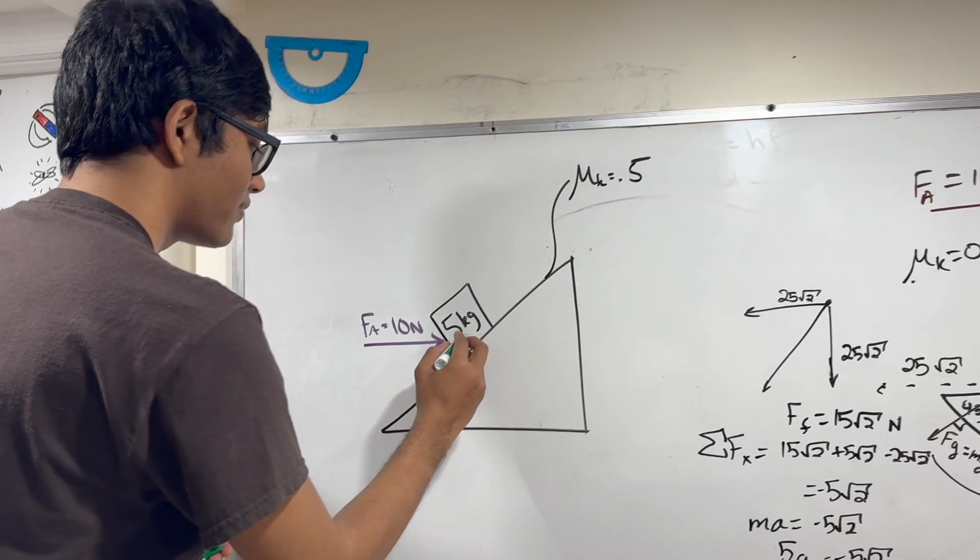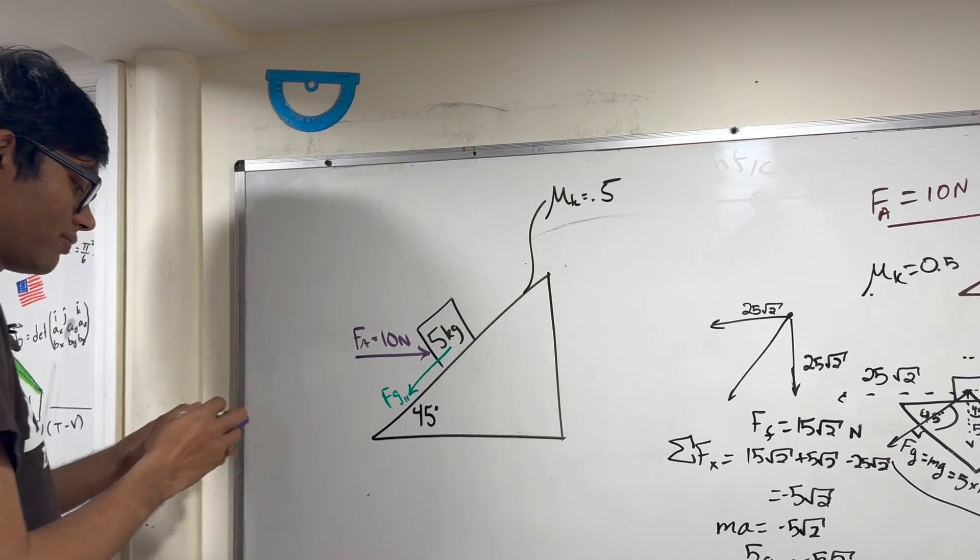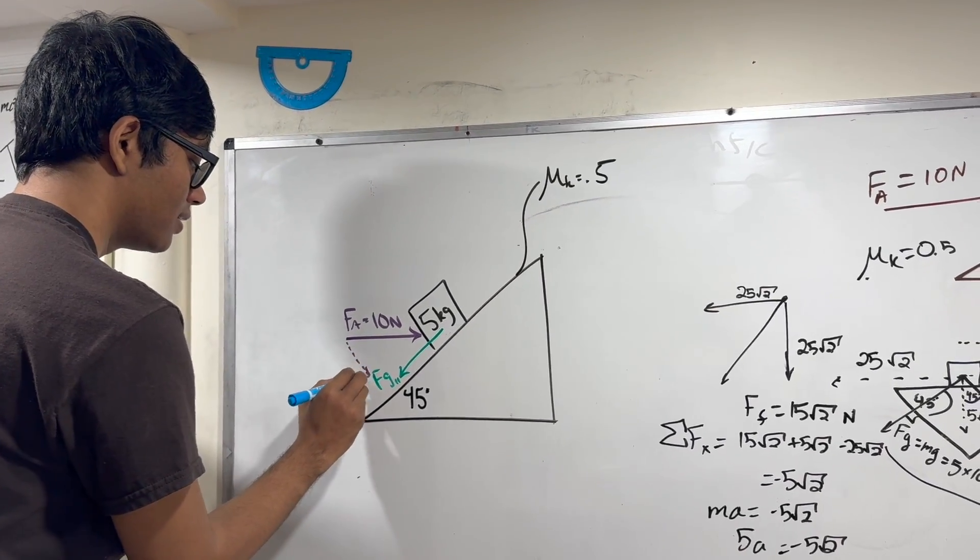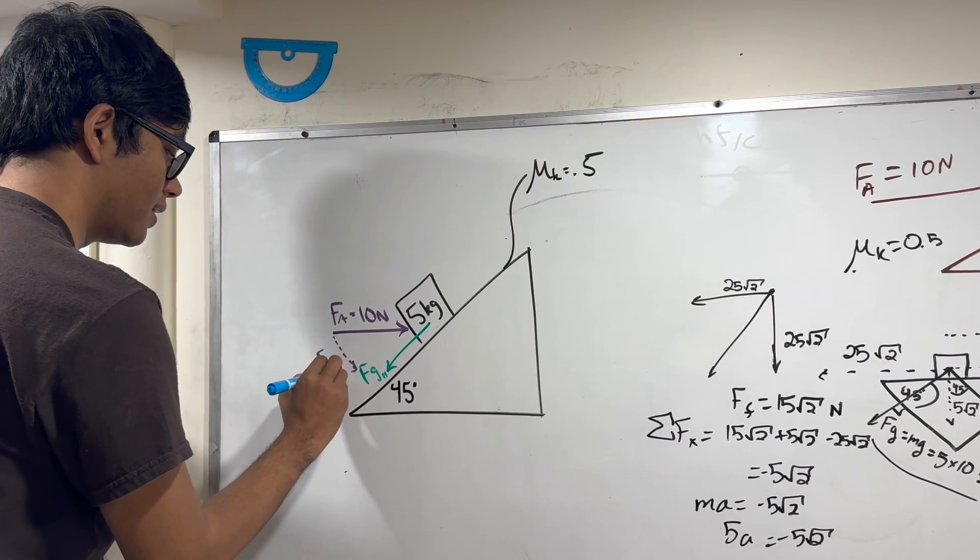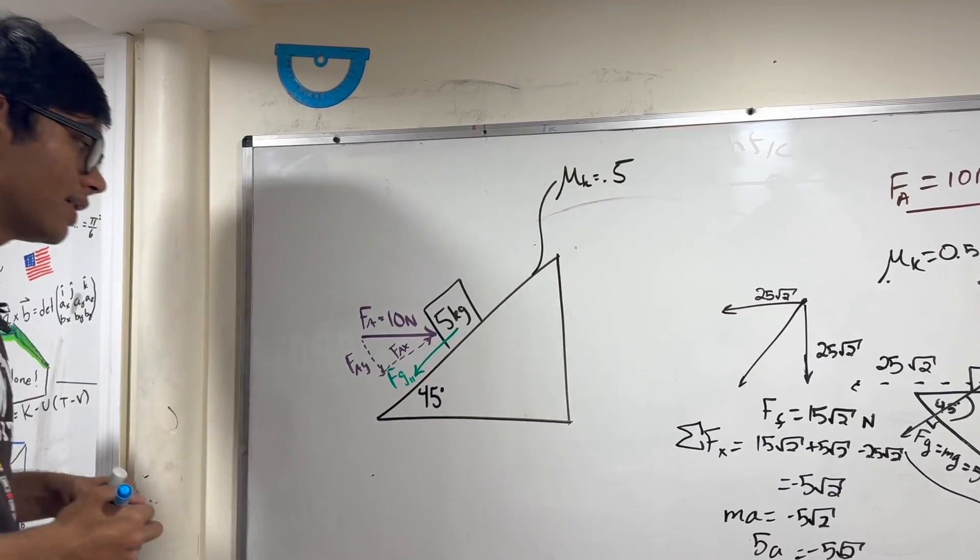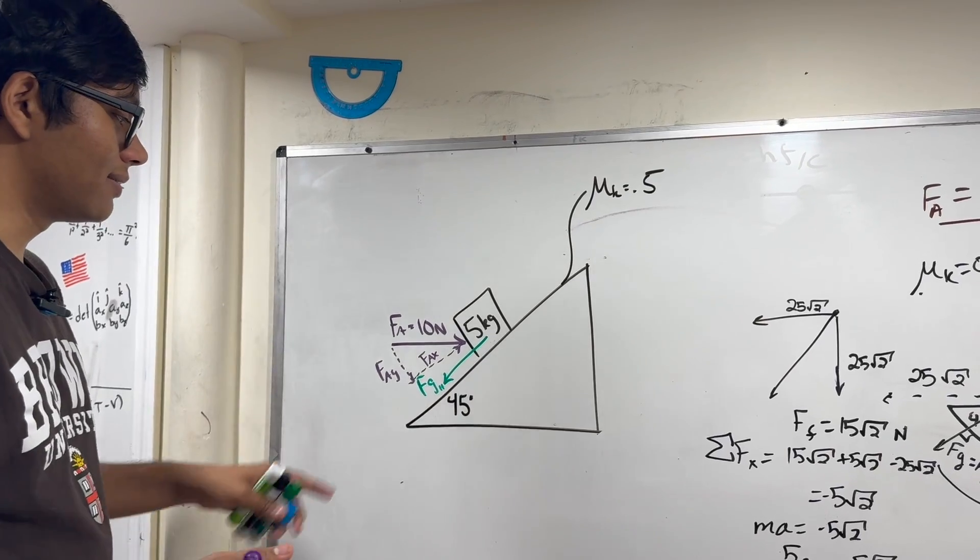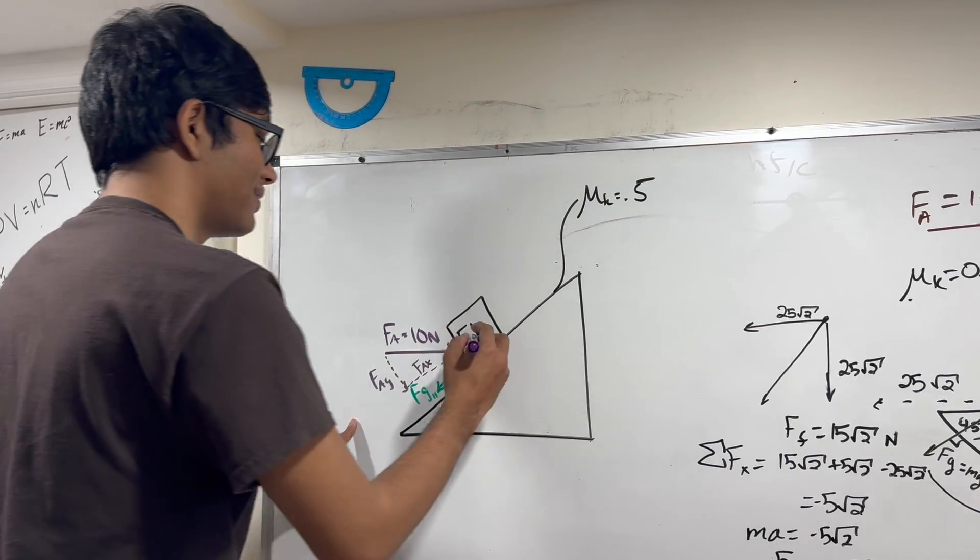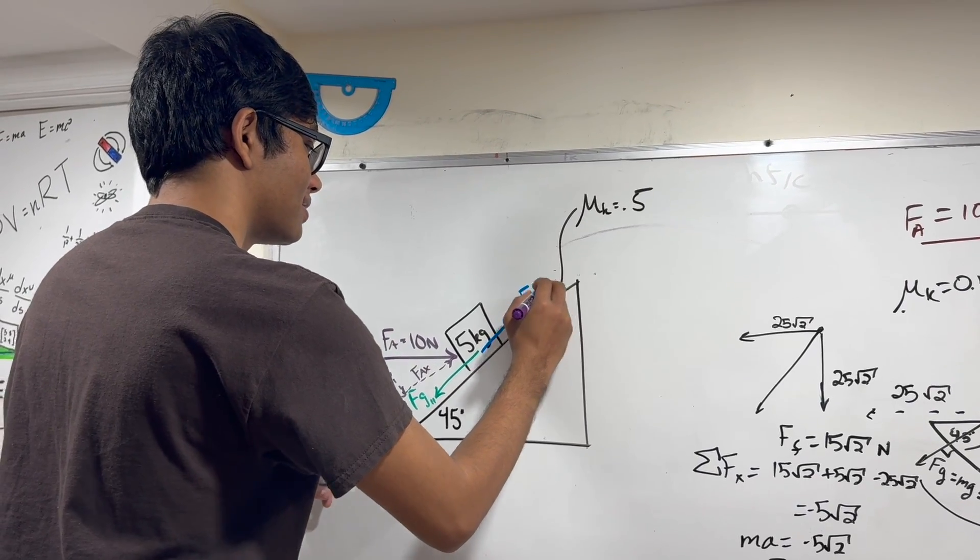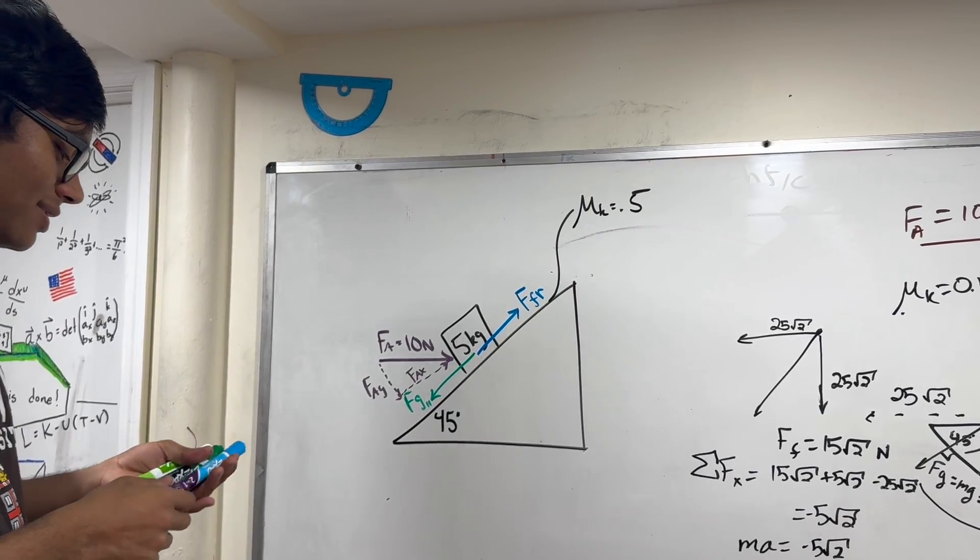First of all, FG parallel acts down as always. Let's decompose the applied force into the y and x components. And finally, which way does friction act? Surprisingly, friction acts in the same direction as the applied force. I'll explain how you can figure that out shortly.